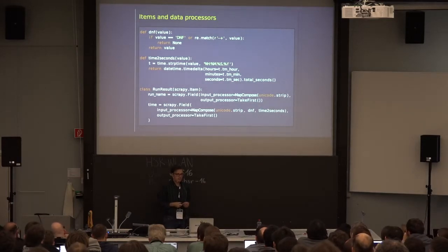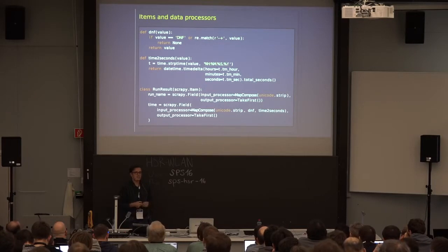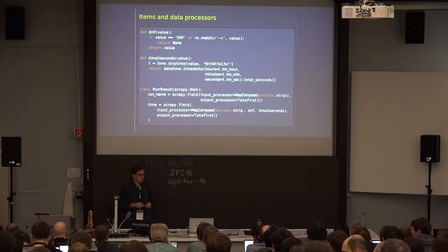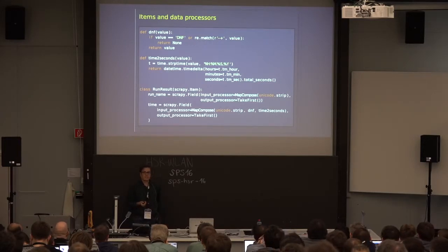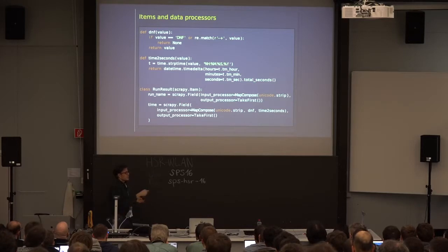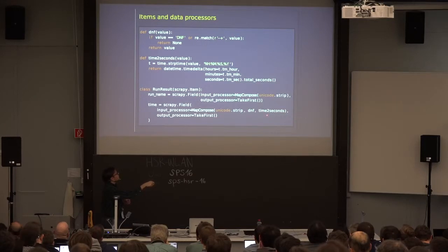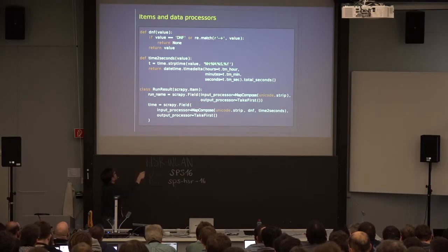Another important topic in Scrapy is items and data processors. You can yield either requests or items from a parse function in Scrapy. Items are basically your building blocks — the data of interest when you scrape with Scrapy. The nice thing is that items are just dictionaries, but they also support input and output processors, which are useful to clean your data, strip it, transform a time string into seconds, or parse did-not-finish results.